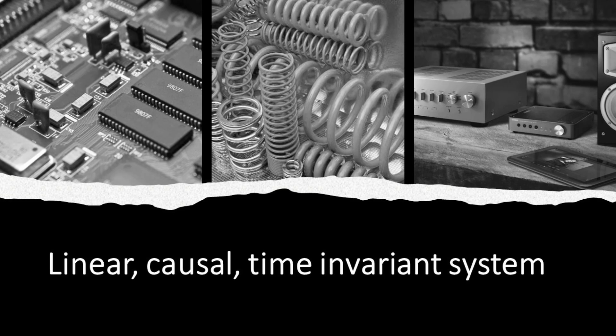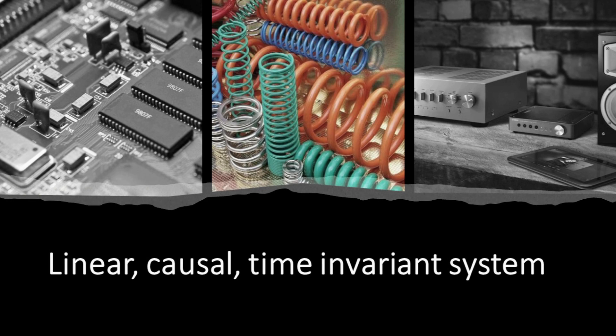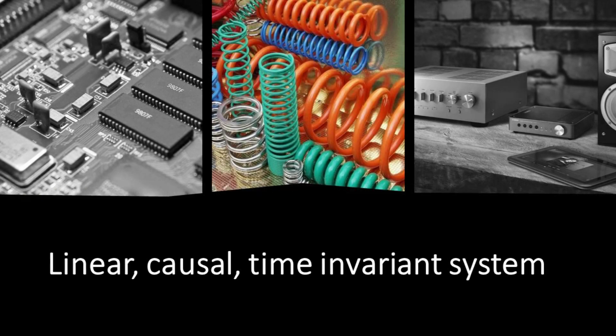Many physical systems in real life can be described by a linear, causal and time invariant model. Examples include simple mechanical systems like springs and dampers, which follow linear behavior over a certain range of displacement, according to Hooke's law.